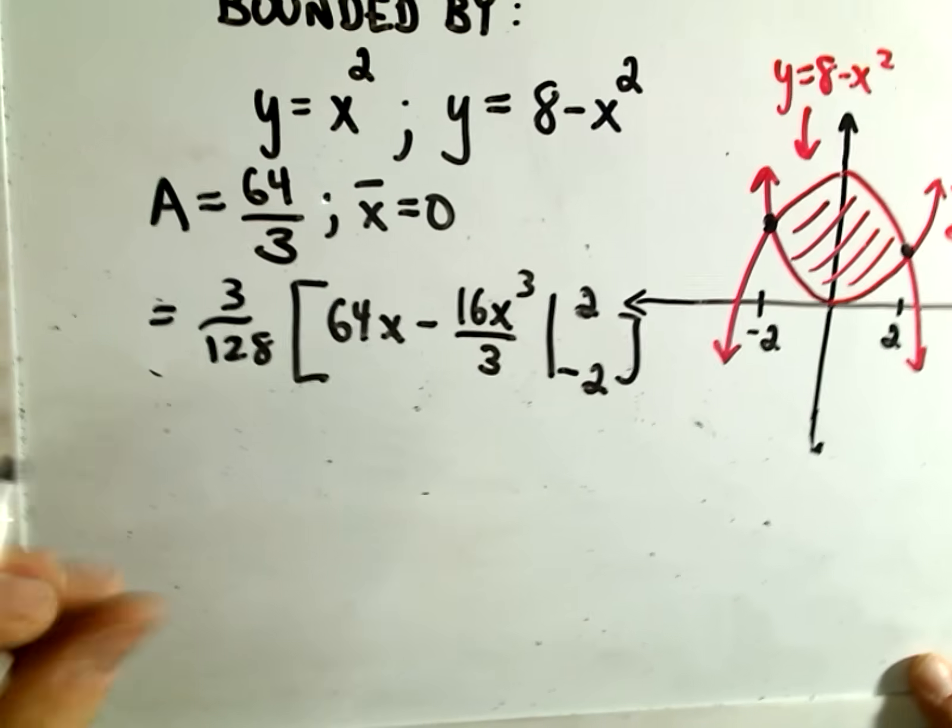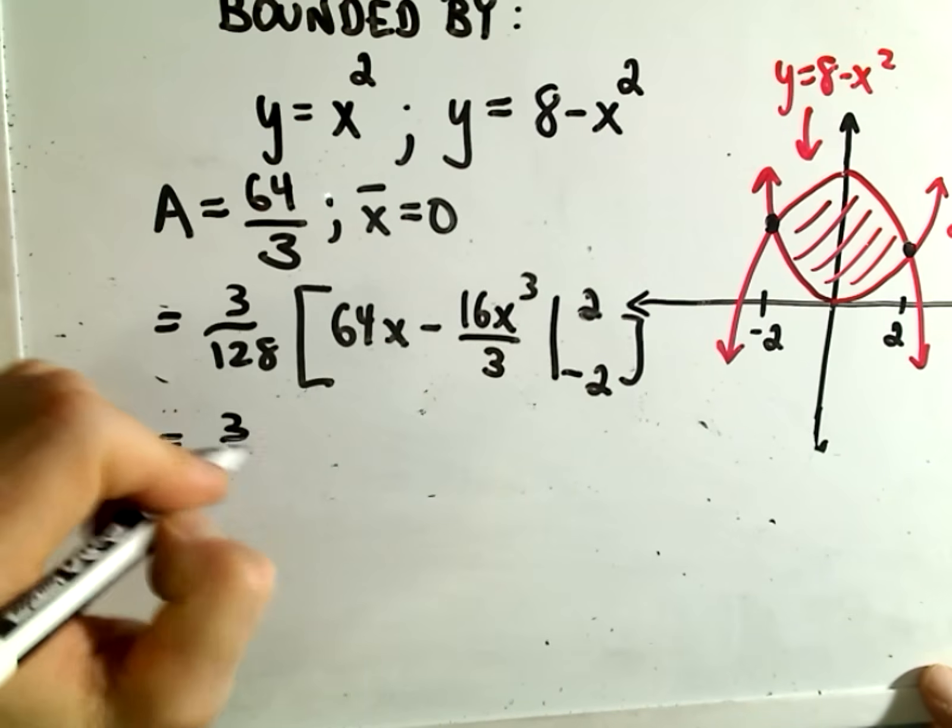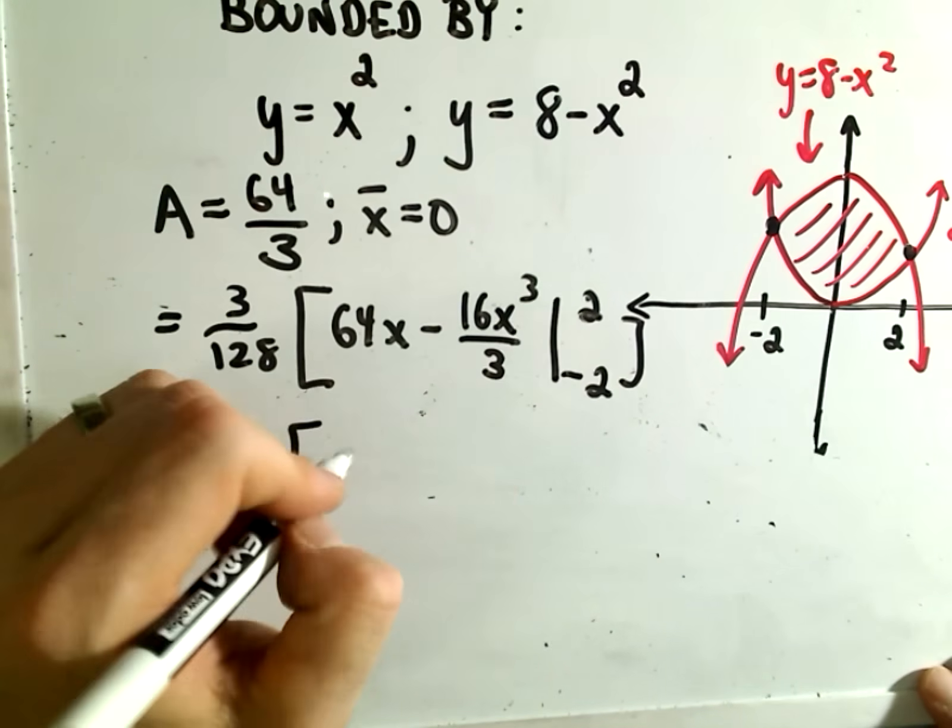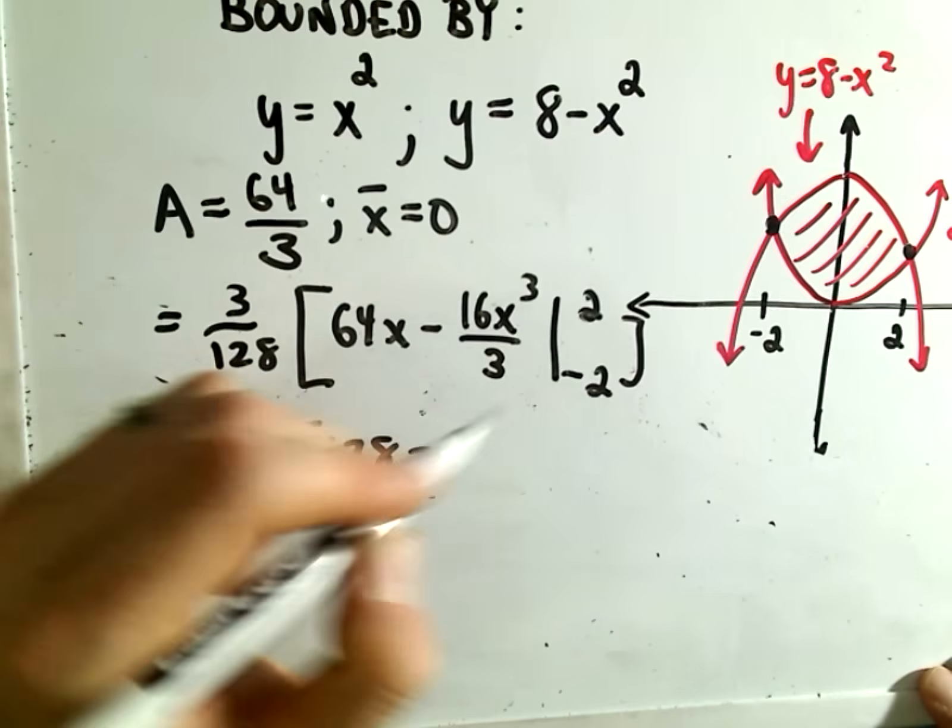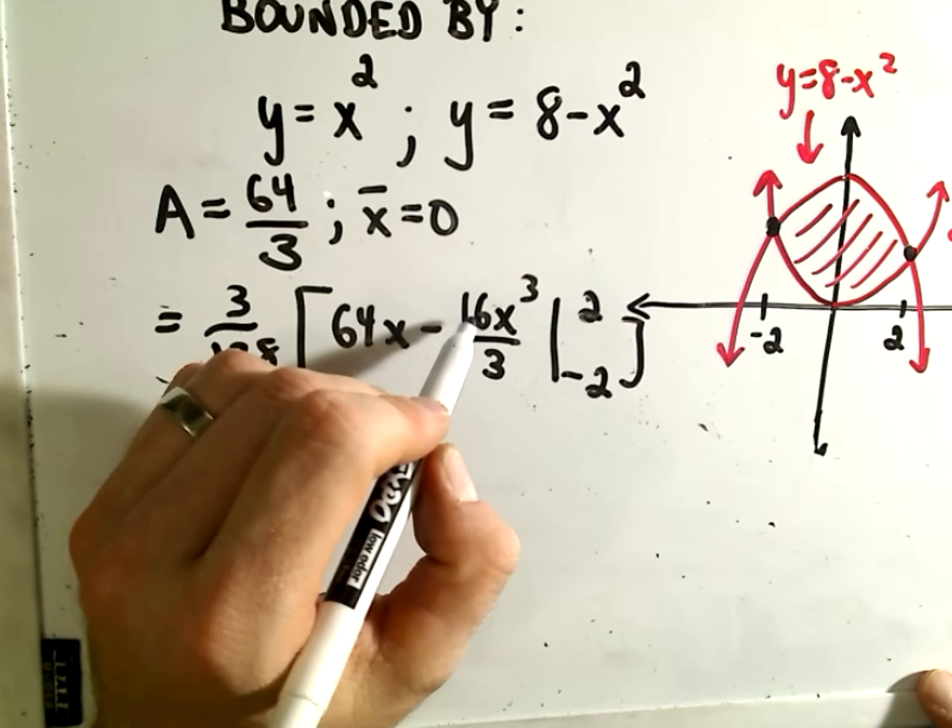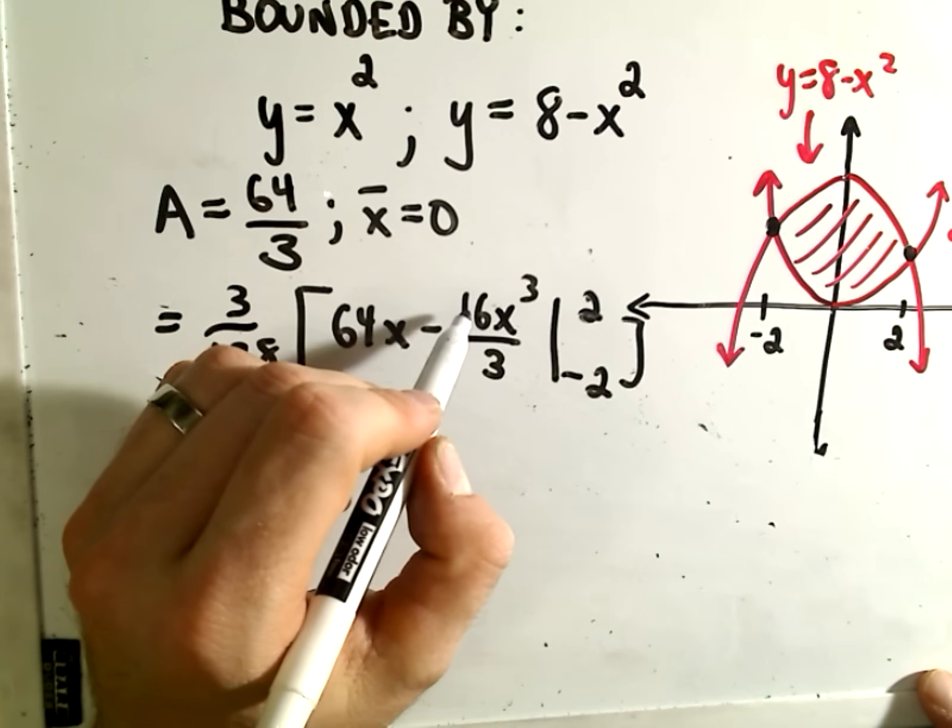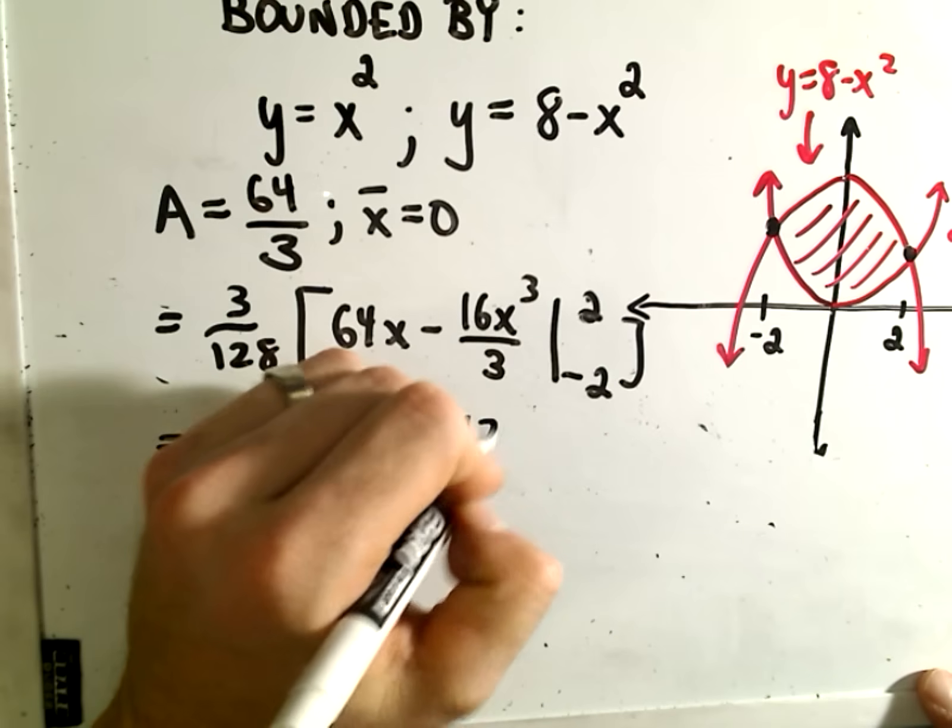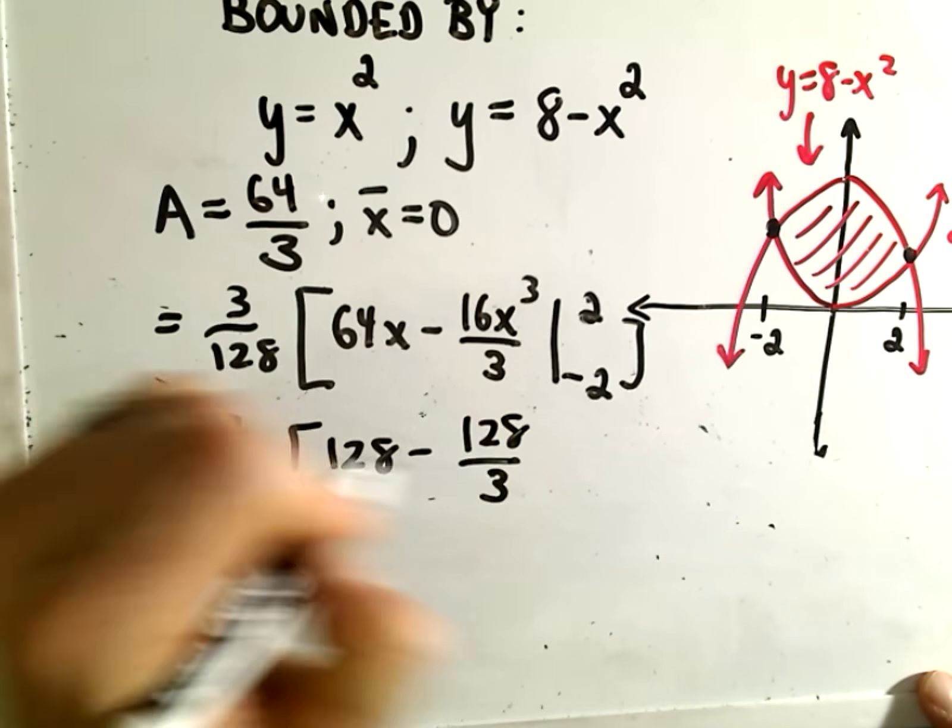Hopefully this won't be too tedious. We'll get 3/128. We'll get 64 times 2, which is 128, minus 2³ which is 8. 8 times 16: 8 times 10 is 80, 8 times 6 is 48, so 80 and 48 is 128. So 128/3.